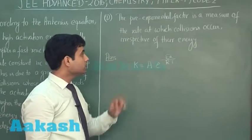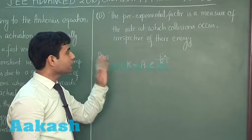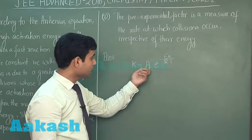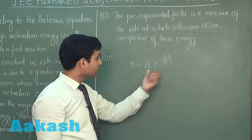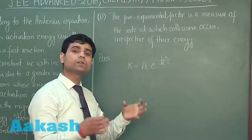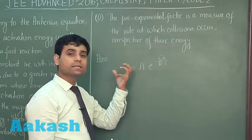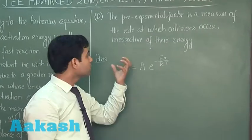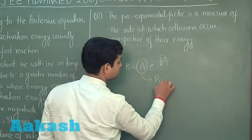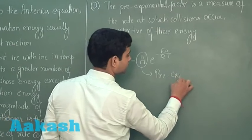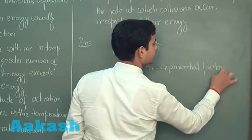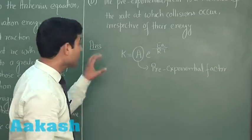The pre-exponential factor A is the maximum value of the rate constant when temperature is infinite — k will equal A. So A is a measure of the number of collisions only; it does not depend on their nature. This is the pre-exponential factor, and option D is also correct.